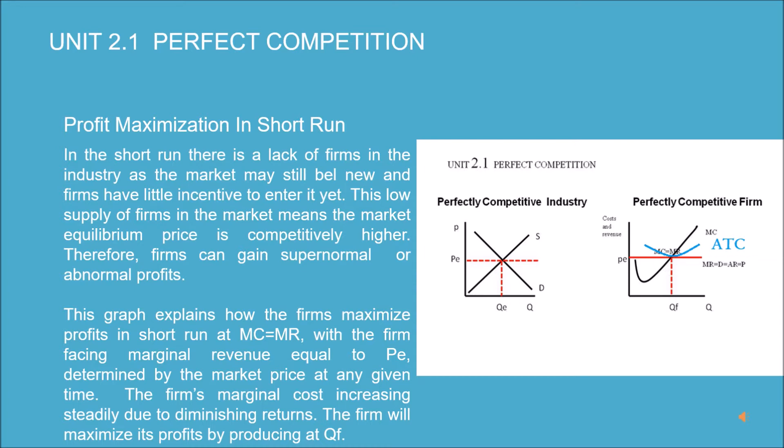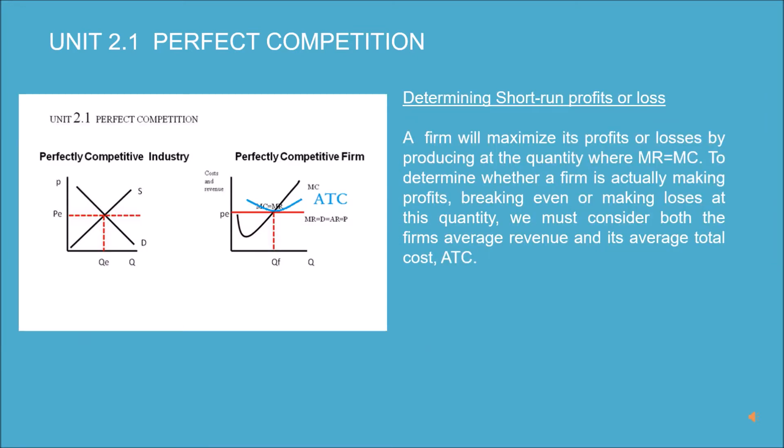The firm's marginal cost increases steadily due to diminishing returns. The firm will maximize its profits by producing at Q_f. To determine whether a firm is making profits, breaking even, or making losses at this quantity, we must consider both the firm's average revenue and its average total cost (ATC).